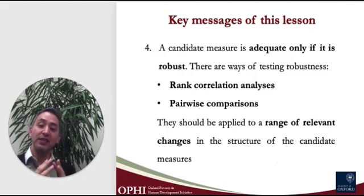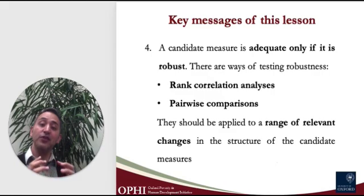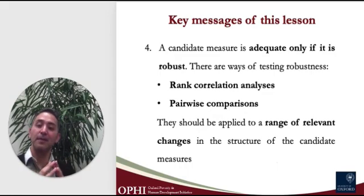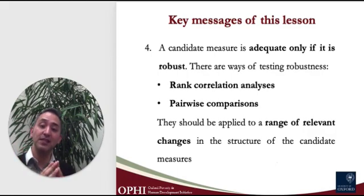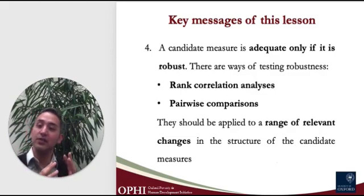One way of making sure that's the case is by performing a rank correlation analysis. This analysis is a simple and transparent way of assessing robustness. Another approach is to take into account the fact that virtually all national MPIs are computed using survey data which have sampling error. This matters when we want to compare poverty estimates between regions or provinces or states. Pairwise comparisons use that information because they rely on statistical tests. Importantly, one may use robustness analyses to be sure of the stability of a measure to an array of possible alternatives, not necessarily to all the alternatives that one can imagine.